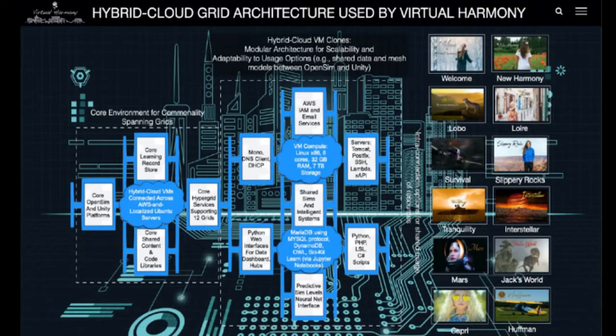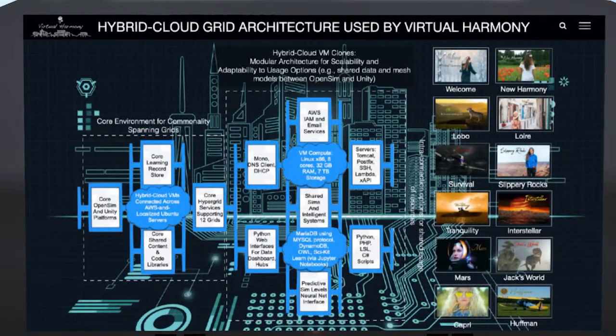It is a hybrid architecture. We have components that operate in the cloud and components that operate on Linux servers independent from the cloud, but they're interconnected. We move data back and forth. On the far right-hand side you can see the 12 grids that we currently have operating around the clock.